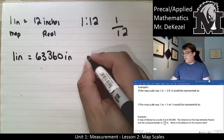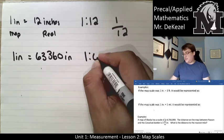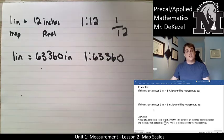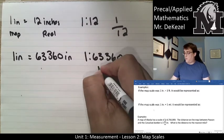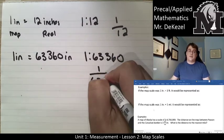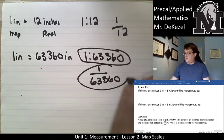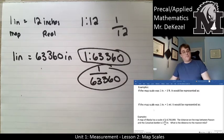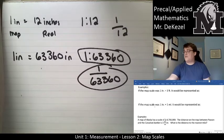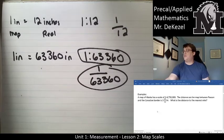So we could represent that in a couple of different ways on a map. We might write 1 inch on the map is 63,360 inches, or we might write 1 over 63,360 inches. These are two ways that it could be represented on the map. Let's jump right into some examples of how we can use this to find out what some actual distances are.